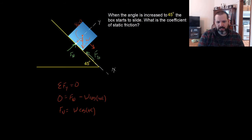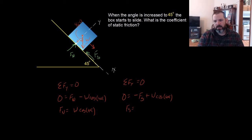If we sum forces in the x, they equal zero. Zero equals minus the force of static friction plus w cosine of 45. This helps us find that F_s equals w cosine 45.